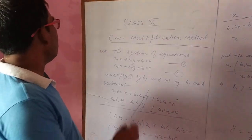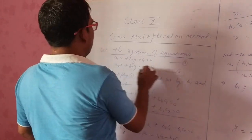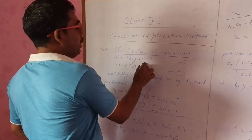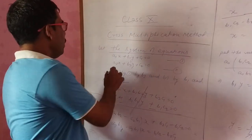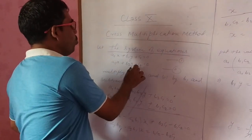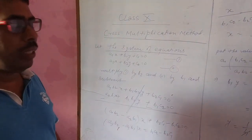For this, we consider two systems of equations. First, a1x plus b1y plus c1 equal to 0. And second, a2x plus b2y plus c2 equal to 0. These are general forms of linear equations in two variables.